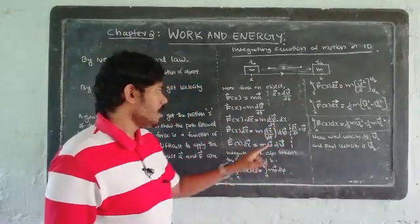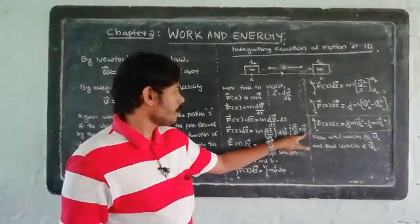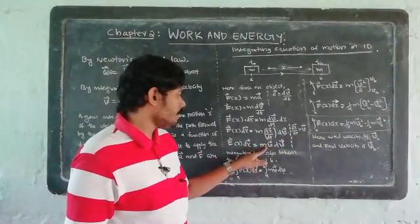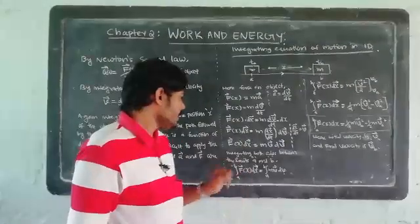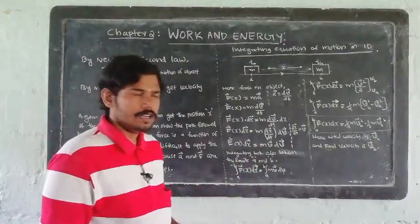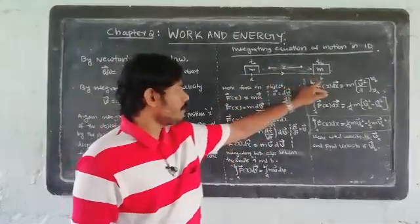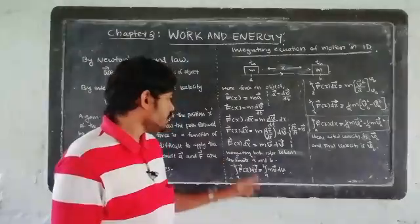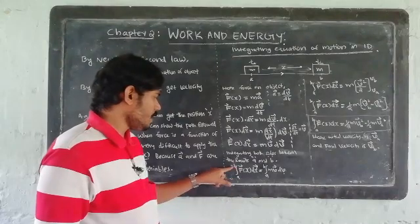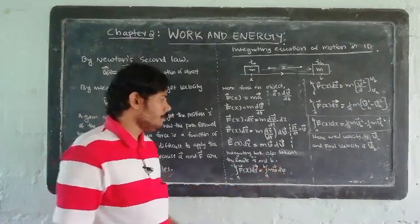Since dx/dt equals velocity v, we get F(x) dx equals m times v dv. Integrating both sides from A to B: the integral from A to B of F(x) dx equals the integral from A to B of m v dv. Since mass m is constant, it can be taken outside: m times the integral from A to B of v dv.